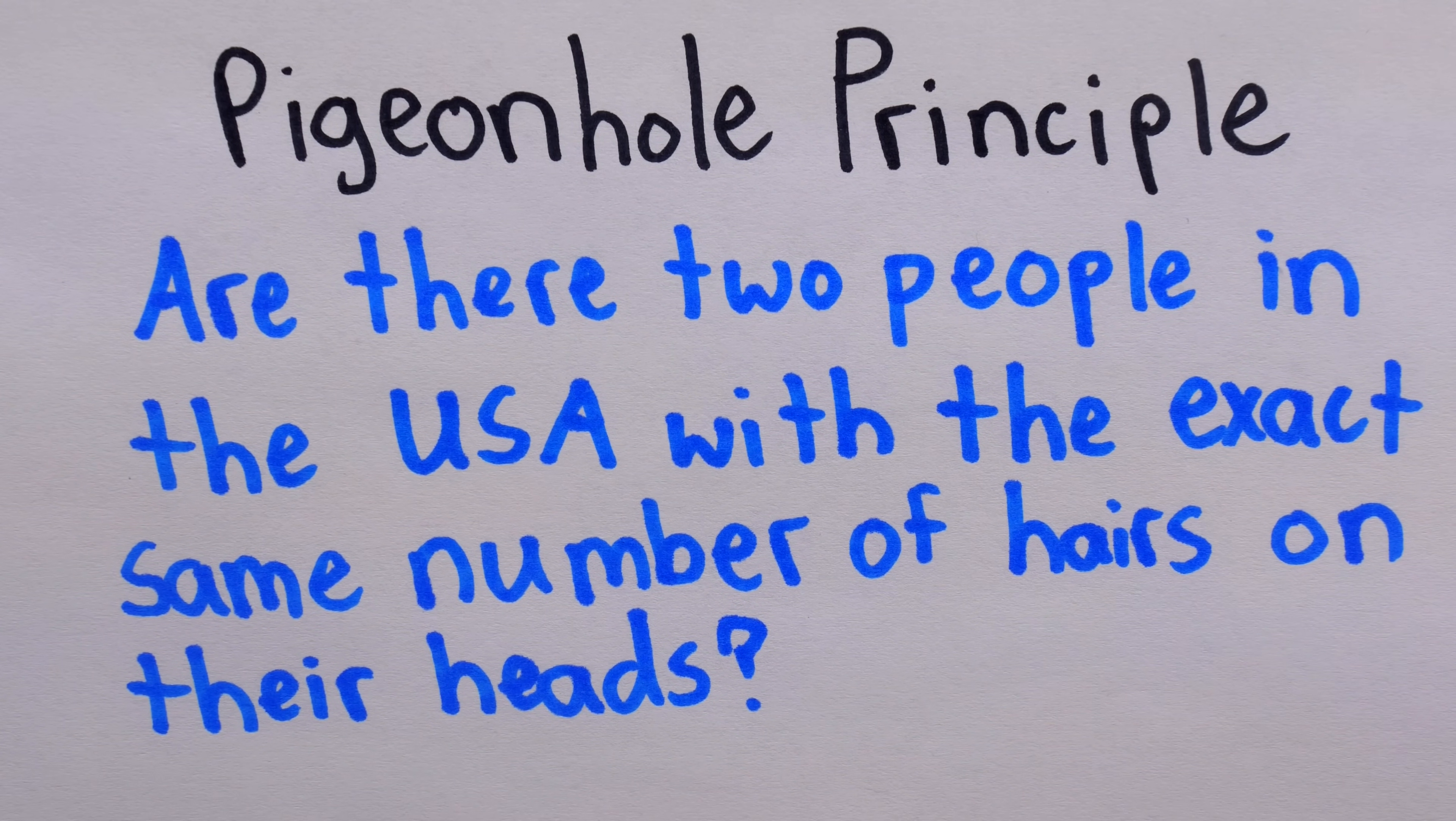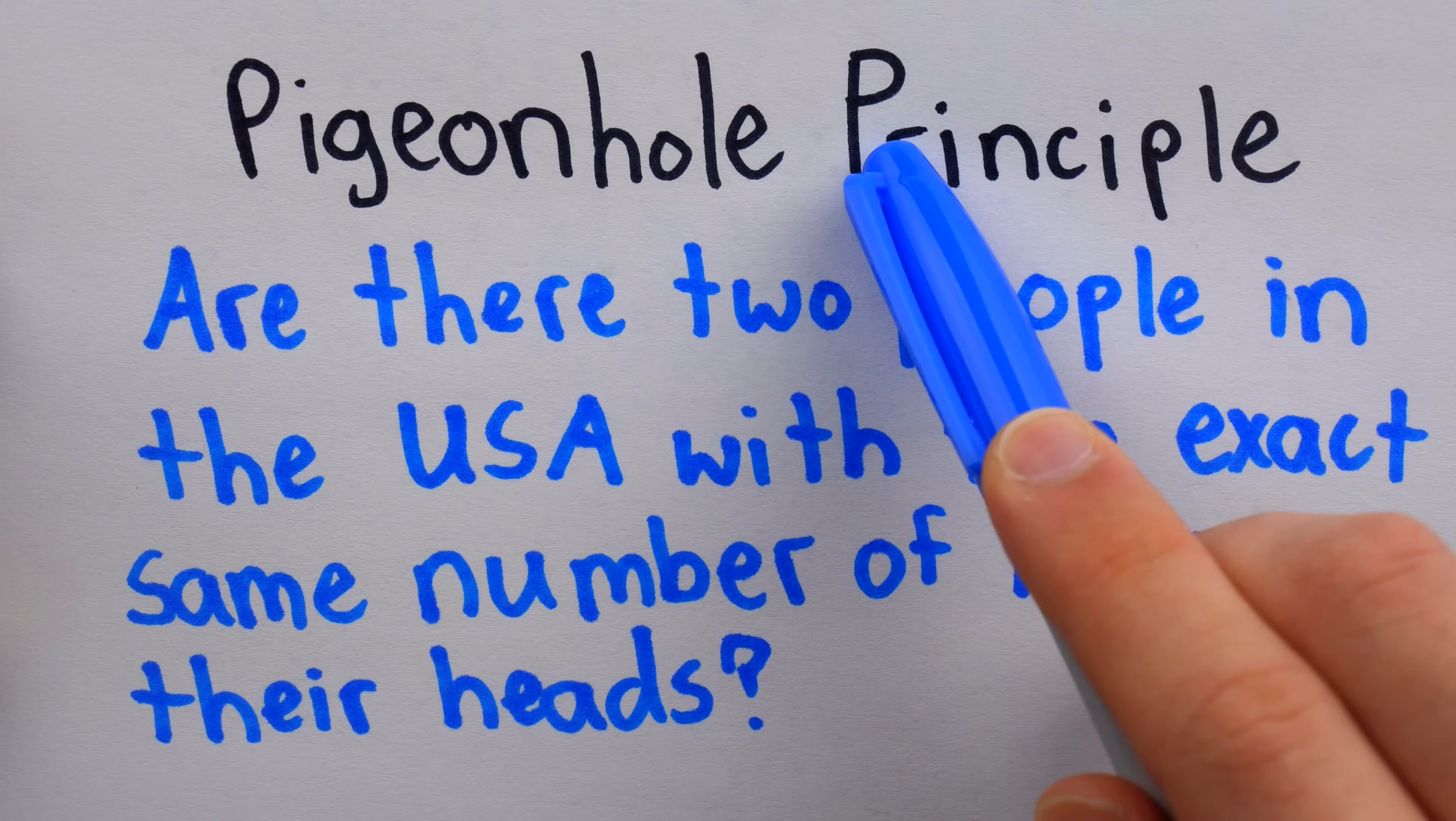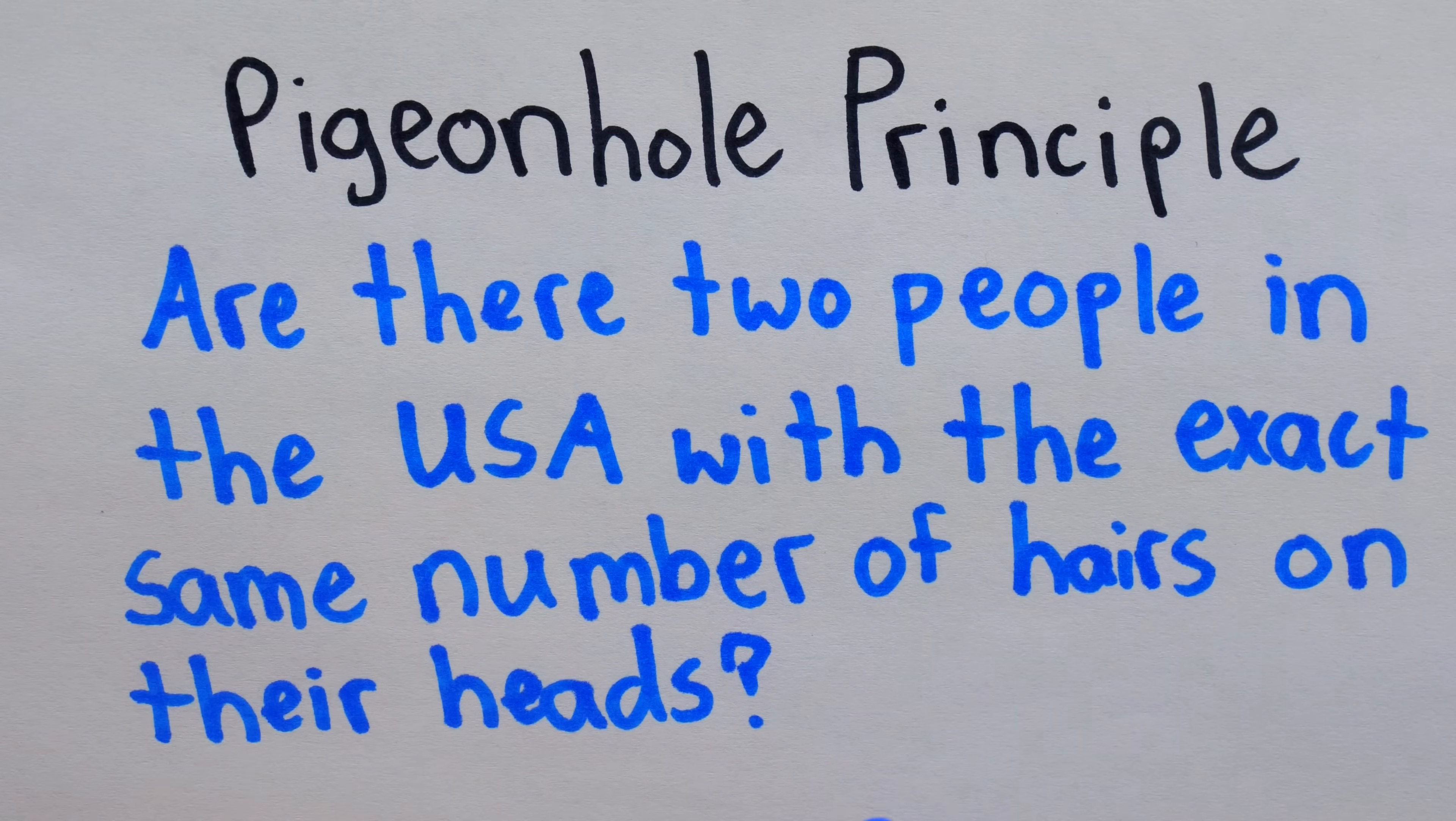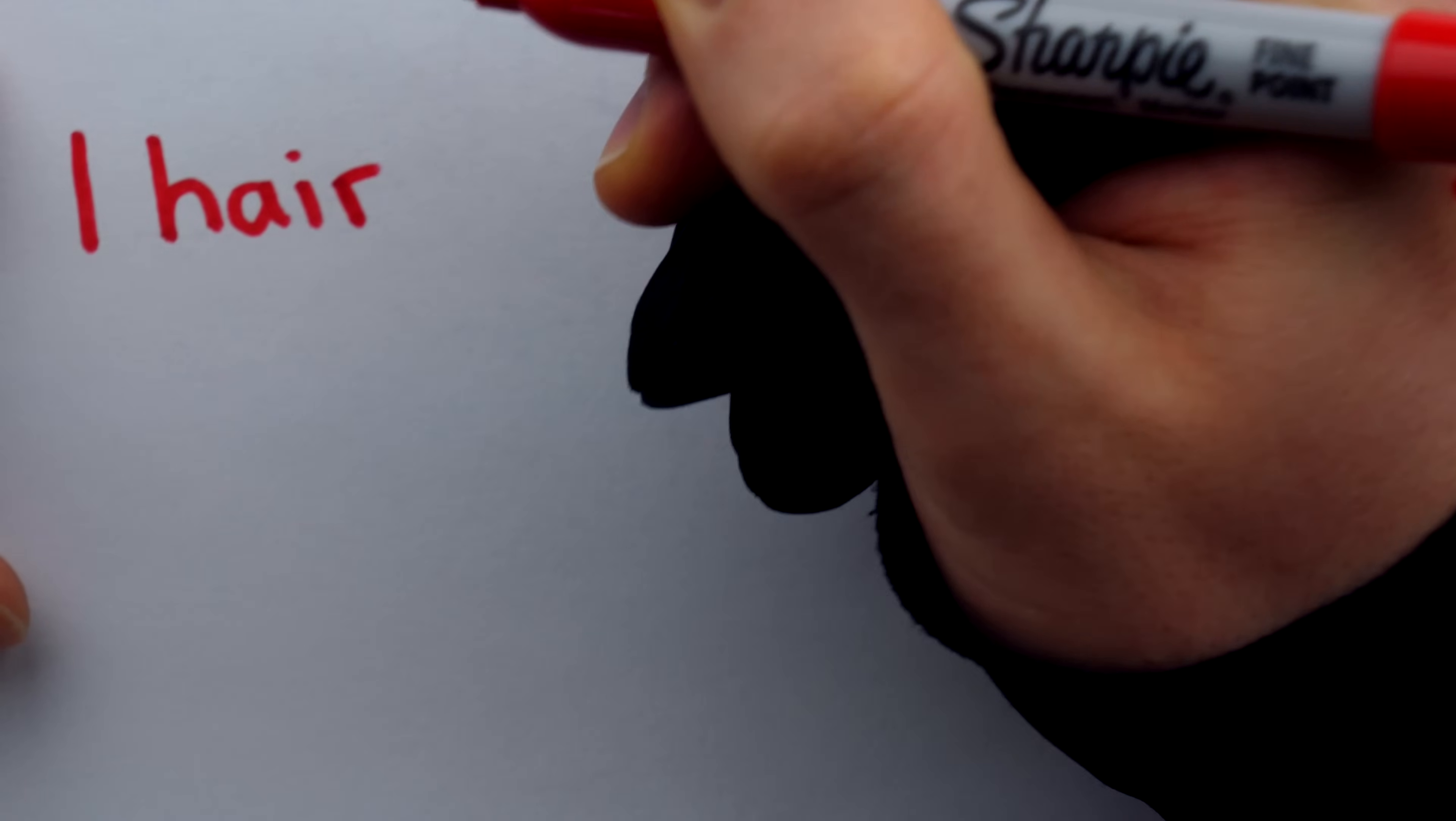The exact number of hairs on your head is a pretty unique personal thing, probably not shared with someone else. Others might think, oh well, any two completely bald people would have zero hairs on their head, though we could exclude them without changing the mathematics much. Either way, the Pigeonhole Principle makes it really easy to answer this question definitively.